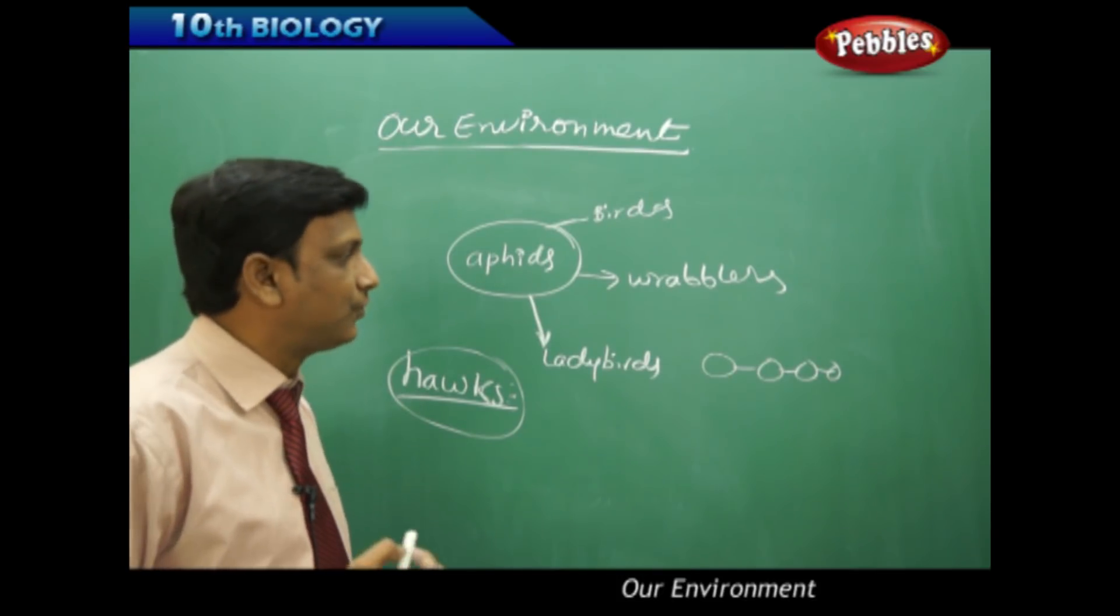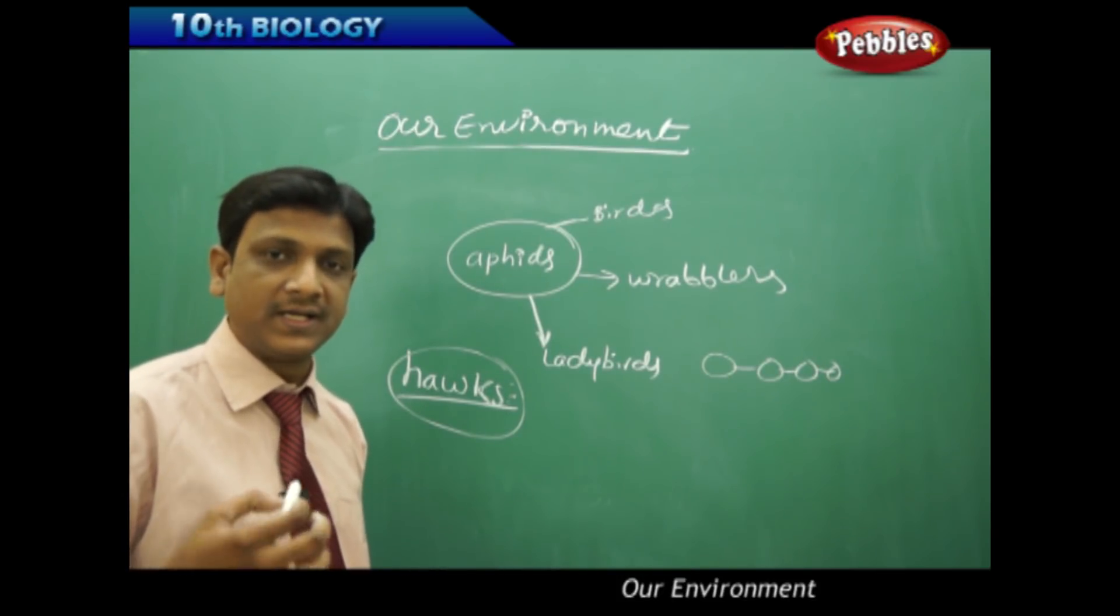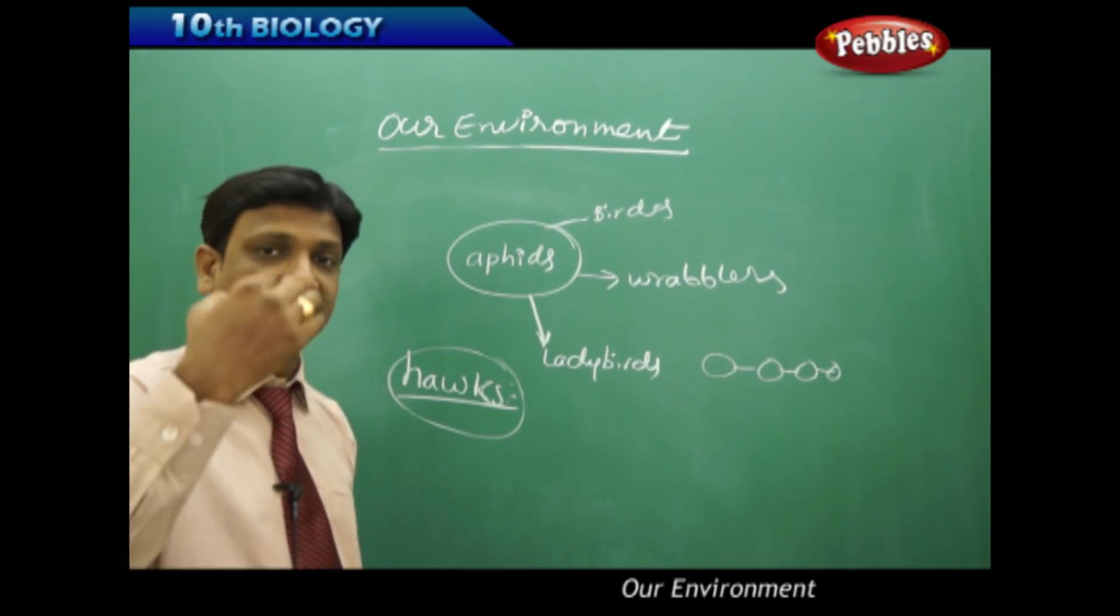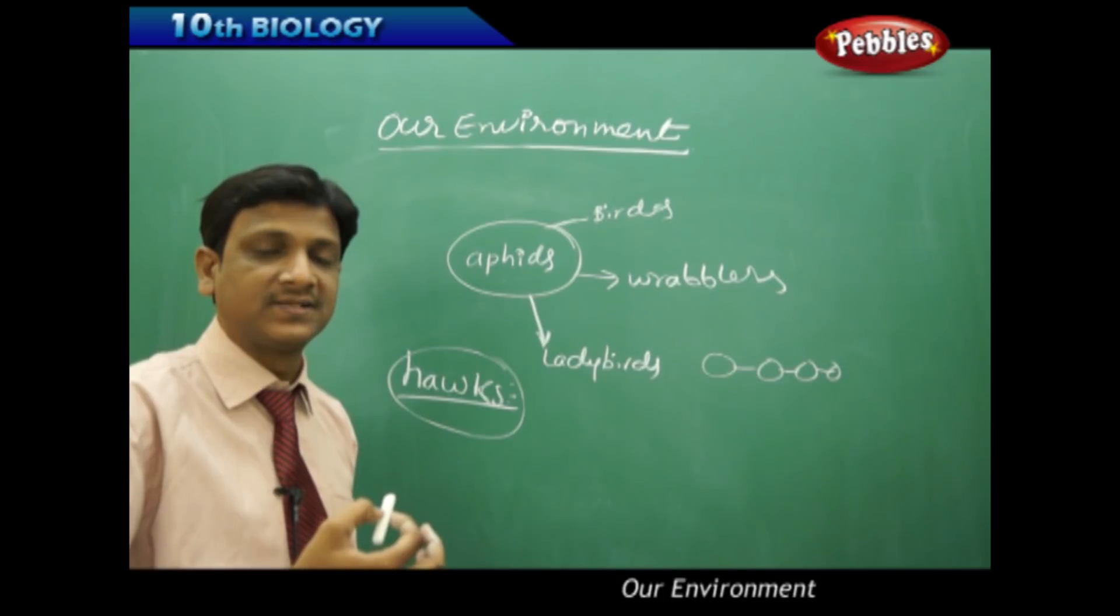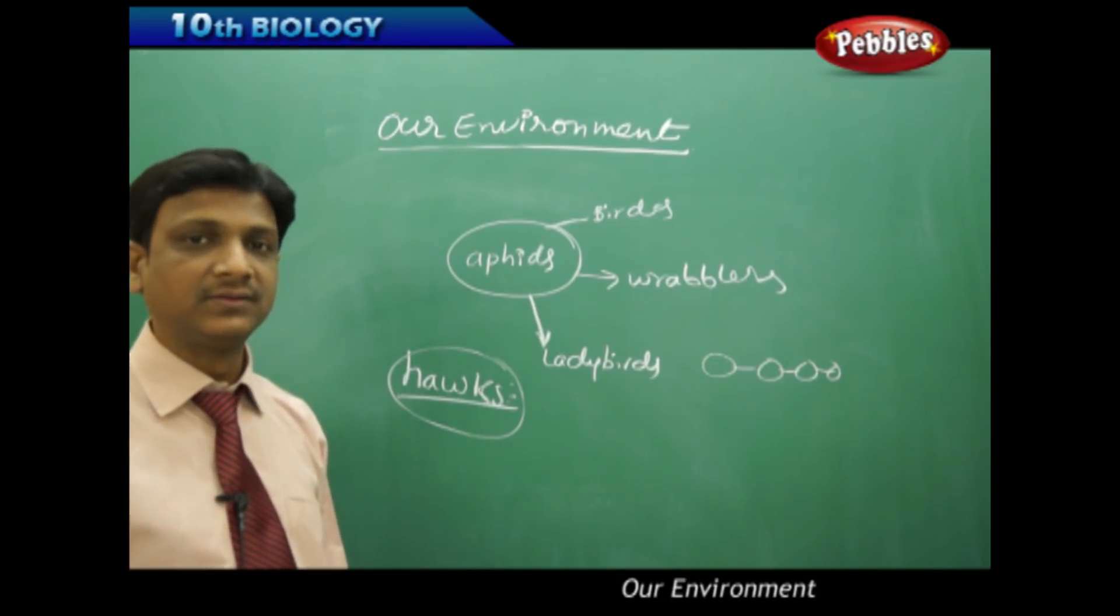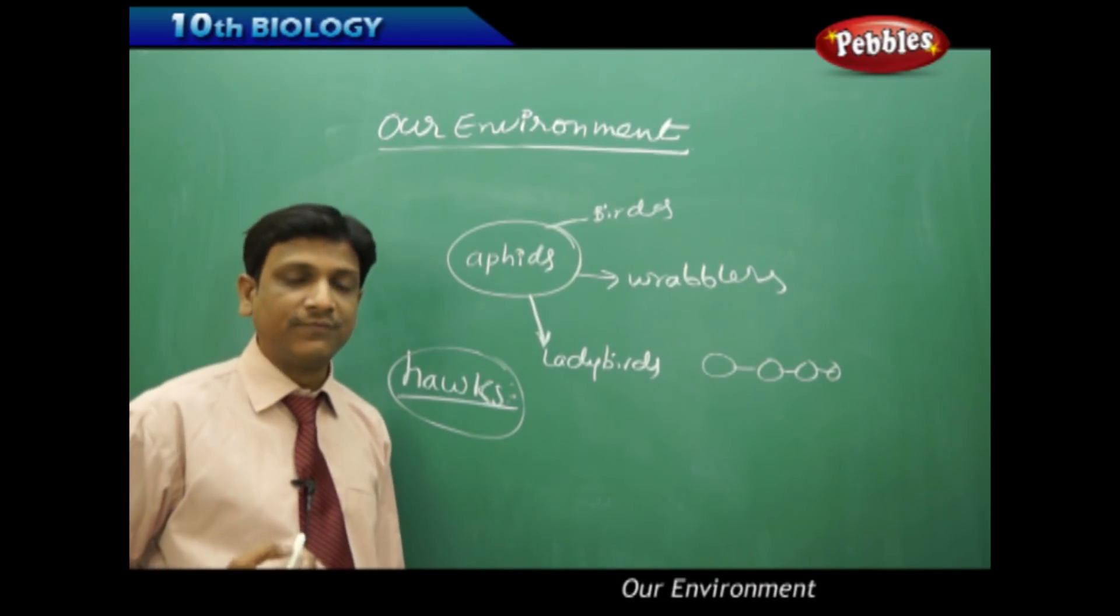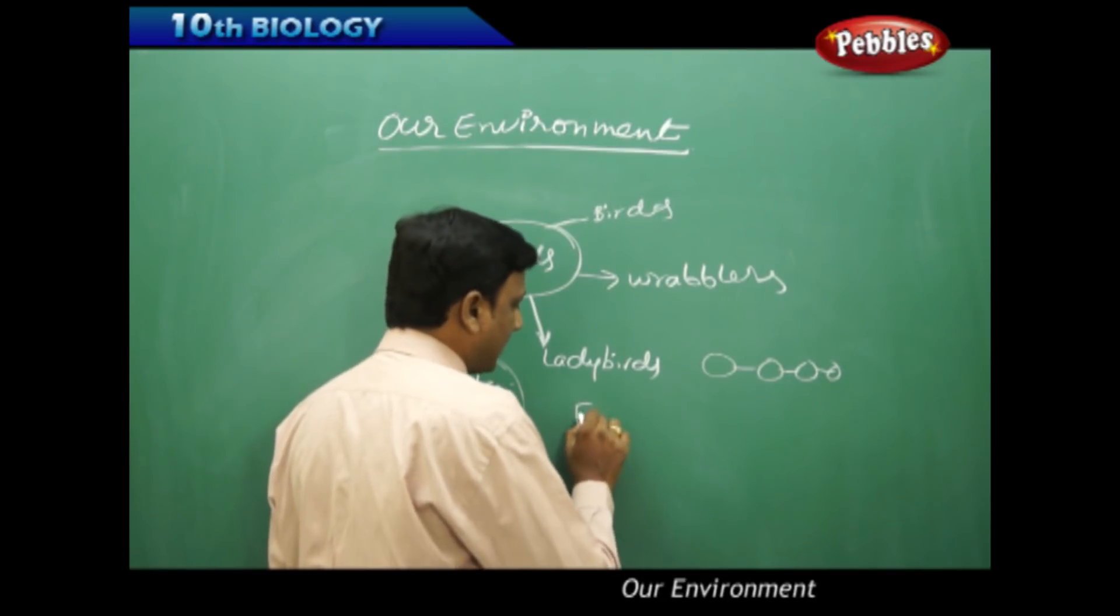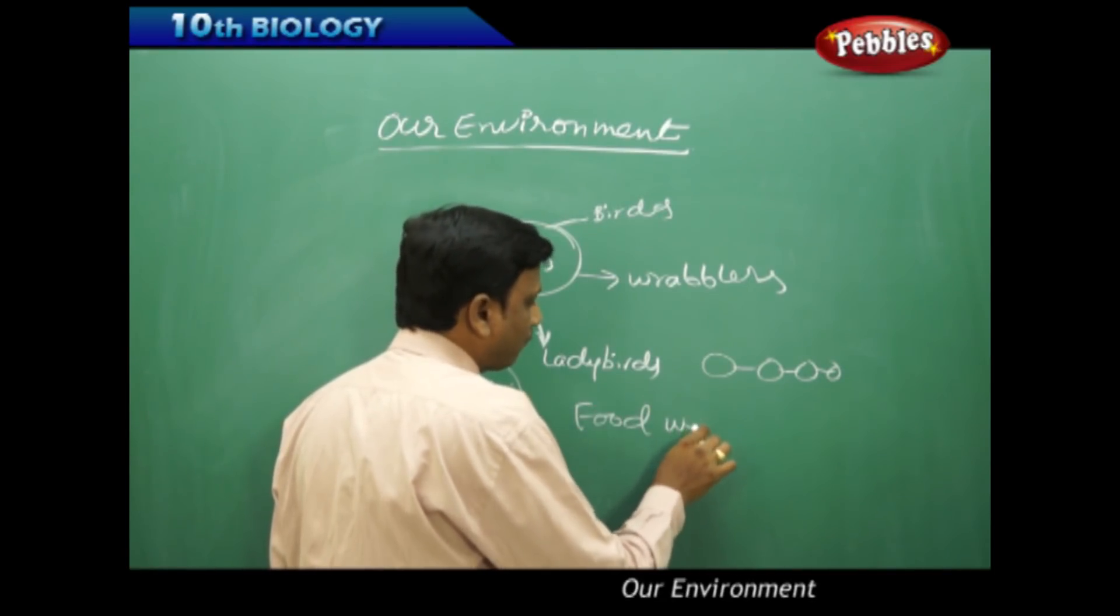So better we use food webs. I already told you that food webs are formed by so many food chains. So the flow of energy from the sun to different organisms and again back to the environment in another form, that all takes place in a very complex manner. So the food relations are better understood in a food web rather than a food chain.